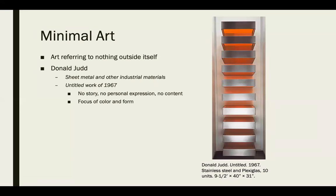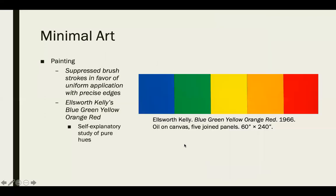Minimal art refers to nothing outside of itself — just breaking things down to the simplest elements and principles. Donald Judd uses sheet metal and other industrial materials; his 1967 untitled work has no story, no personal expression, no content — just a focus on color and form. Ellsworth Kelly takes this further by suppressing brushstrokes in favor of uniform application, which doesn't come naturally to paint and is the opposite of abstract expressionism's celebrated messiness.